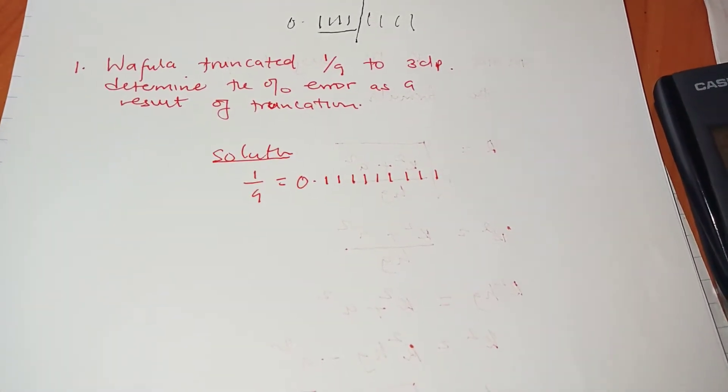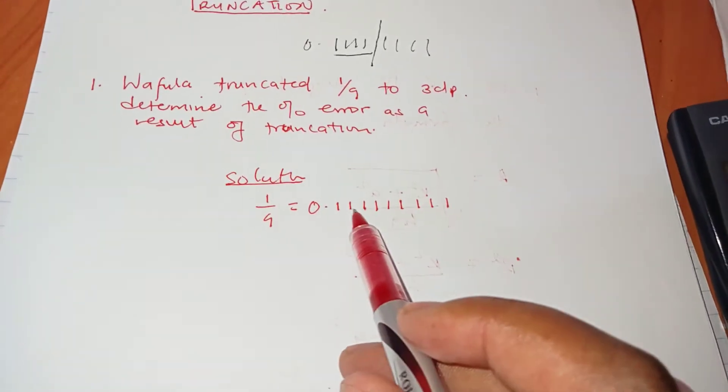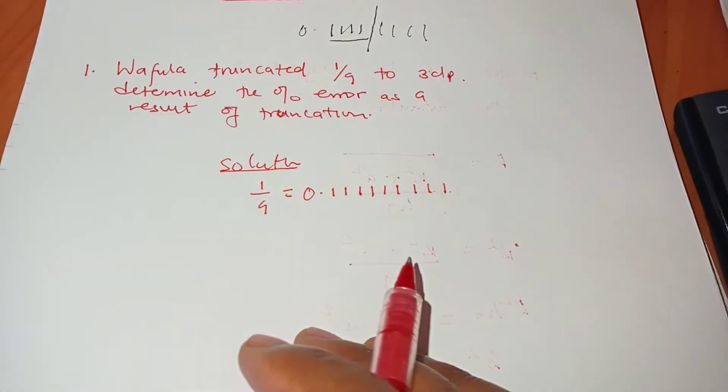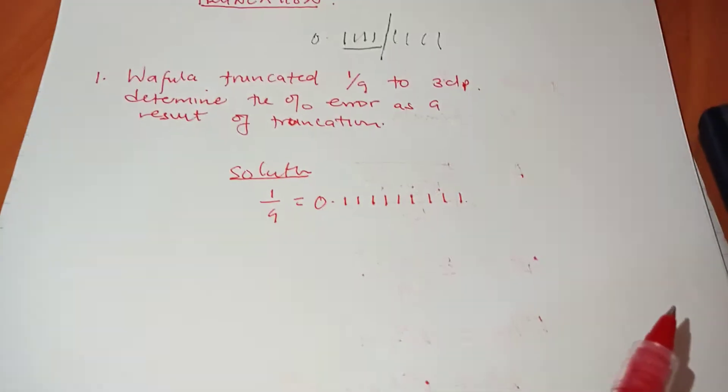1, 2, 3, 4, 5, 6, 7, 8, 9 ones. One two three four five six seven eight nine - correct, that's the accurate answer to our 1 over 9.